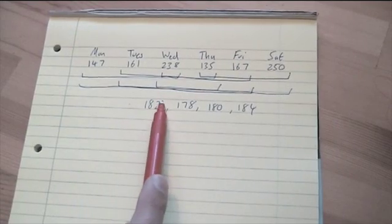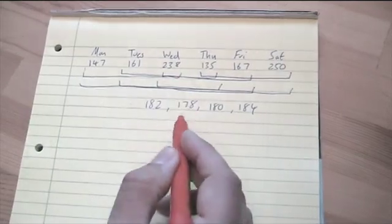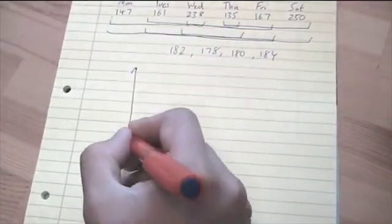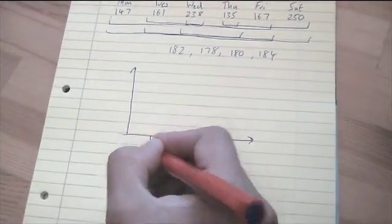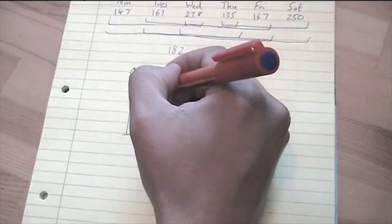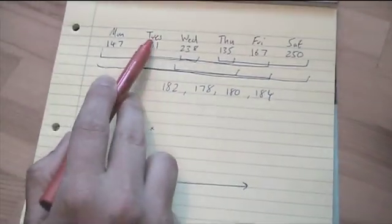The first moving average I worked out, 182, was the average of Monday, Tuesday and Wednesday. If I had to plot that on a graph, I would plot the value above Tuesday. The reason why I'd do that is because Tuesday is the middle one.